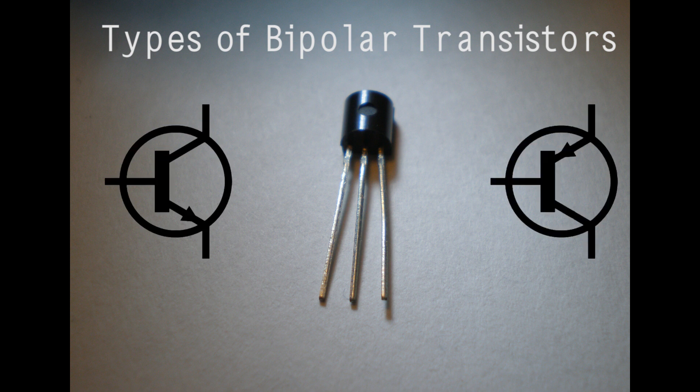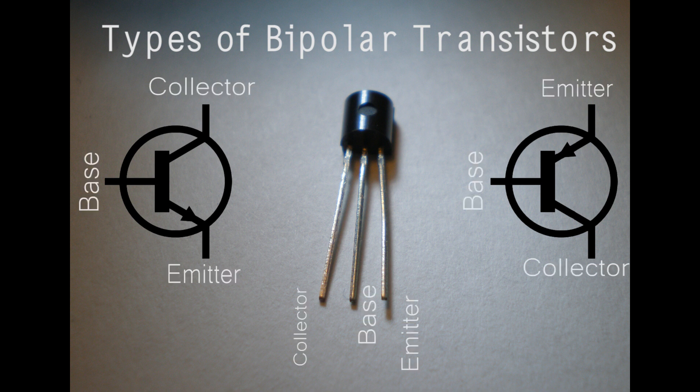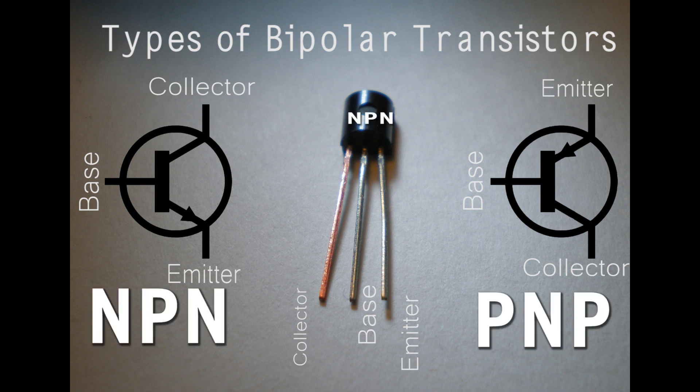There are two main types of transistors, N-type transistors and P-type transistors. Transistors have three pins, labeled Base, Emitter, and Collector. N-type transistors are also called NPN transistors, as P-type transistors are also called PNP transistors. You will soon find out why.